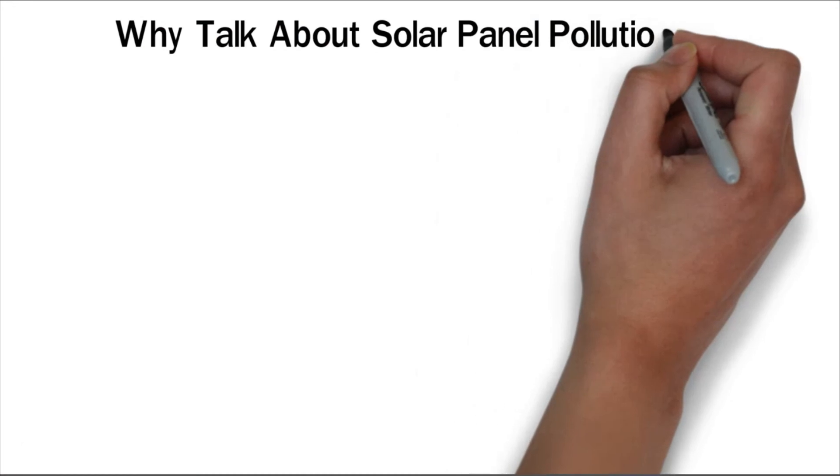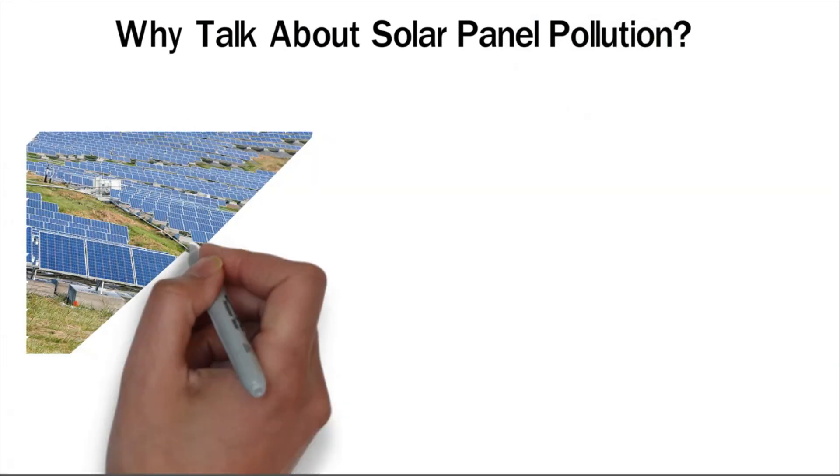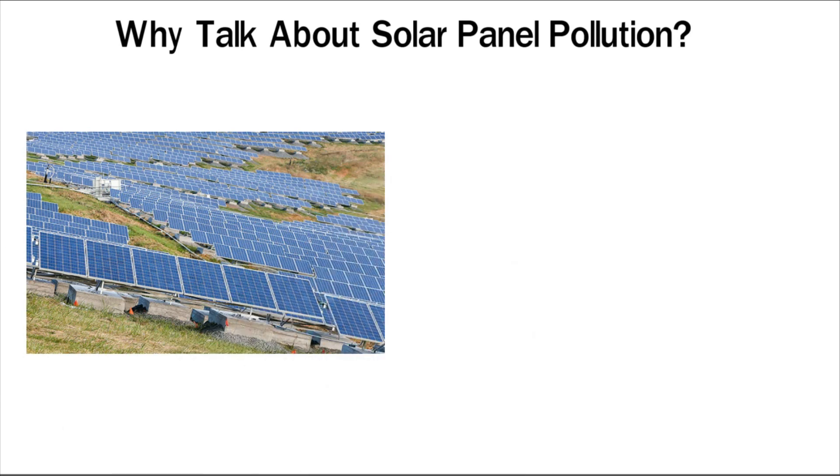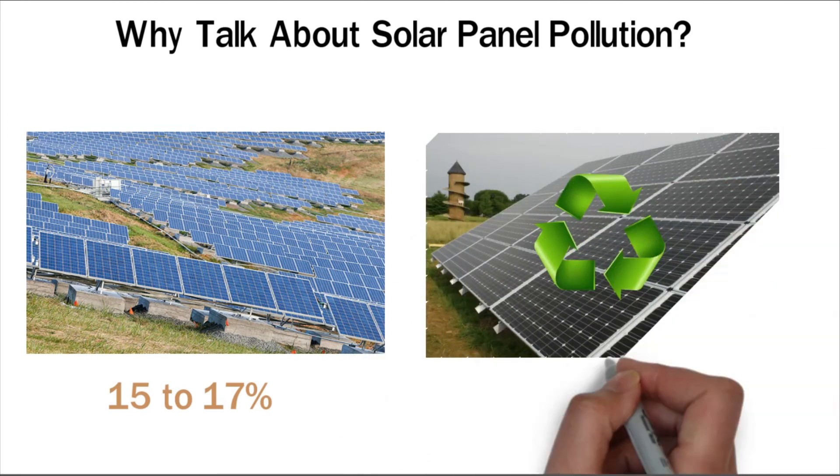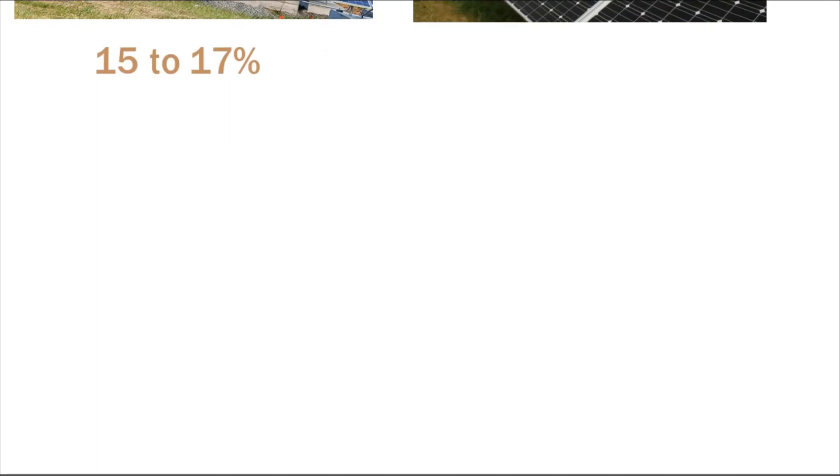Why talk about solar panel pollution? The Natural Resources Defense Council reported 1 million to 3 million tons of solar panels end up in landfills each year. This is about 15 to 17% of the total number of solar panels made in the U.S. in a year. In 2010, only about 3,000 tons of solar panels were recycled. That means millions of tons of chemicals from solar panels went to landfills.